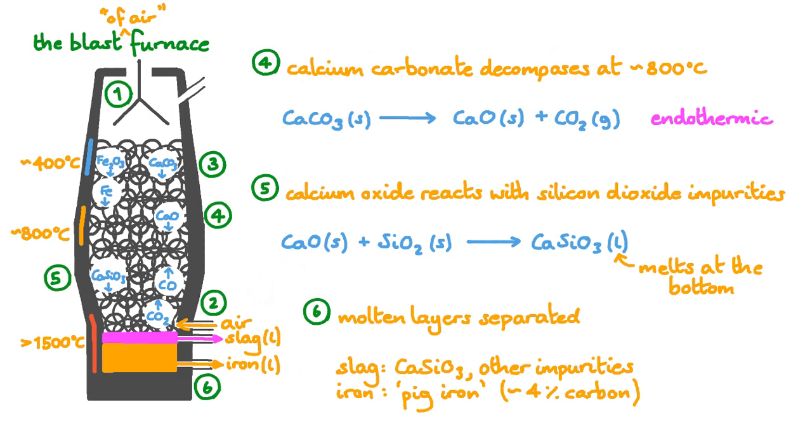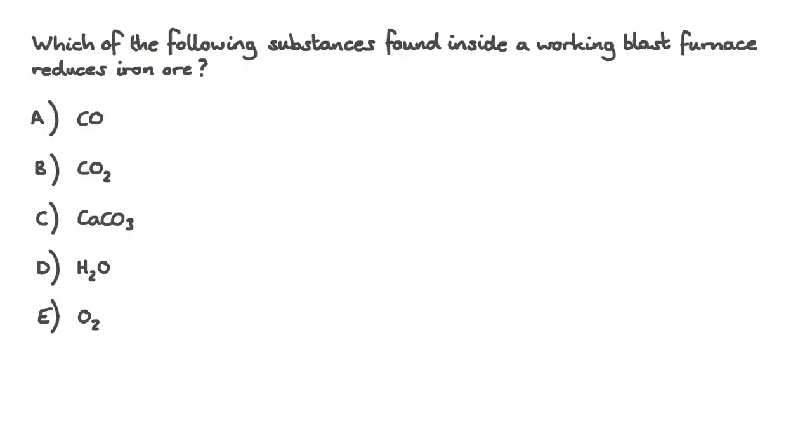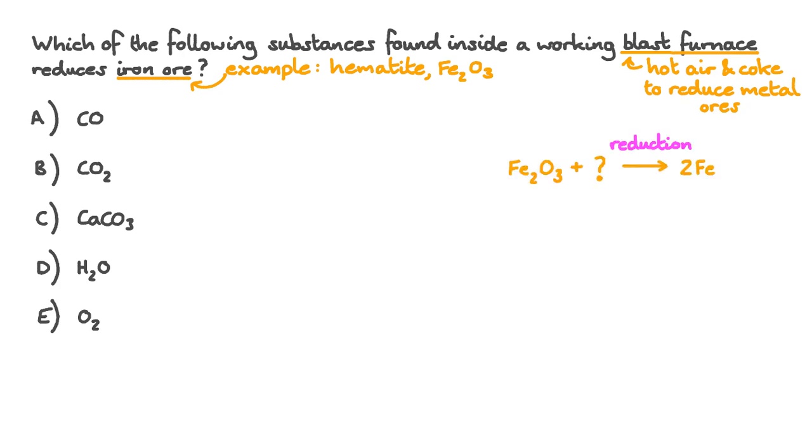Instead, let's do some practice. A blast furnace uses a mixture of hot air and carbon in the form of coke to reduce metal ores, like iron ores and lead ores. In the case of iron, the most commonly used iron ore is hematite, a form of iron-3 oxide. Reduction of this iron ore involves removing the oxygen, leaving the iron behind.